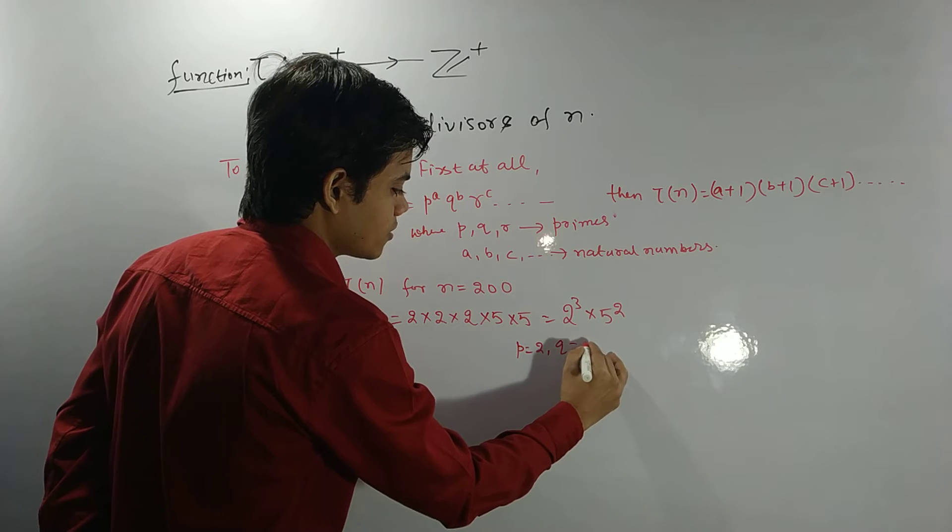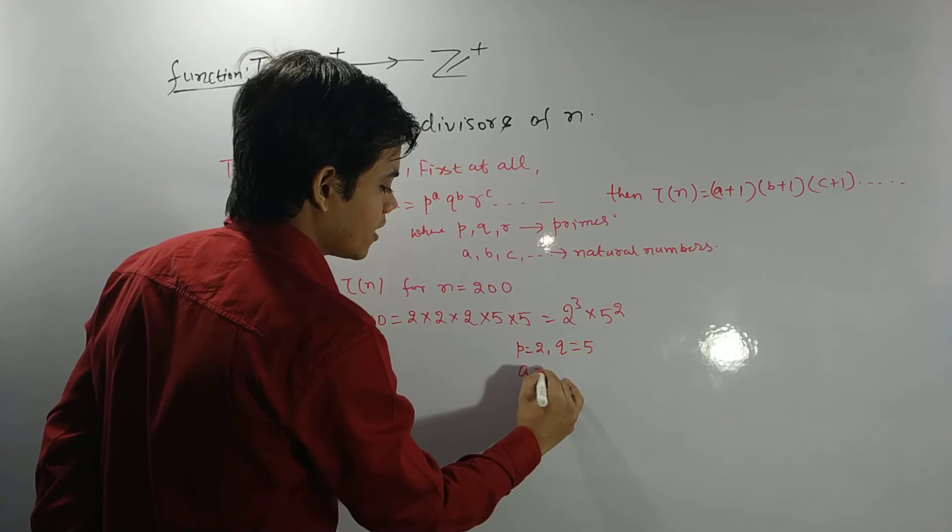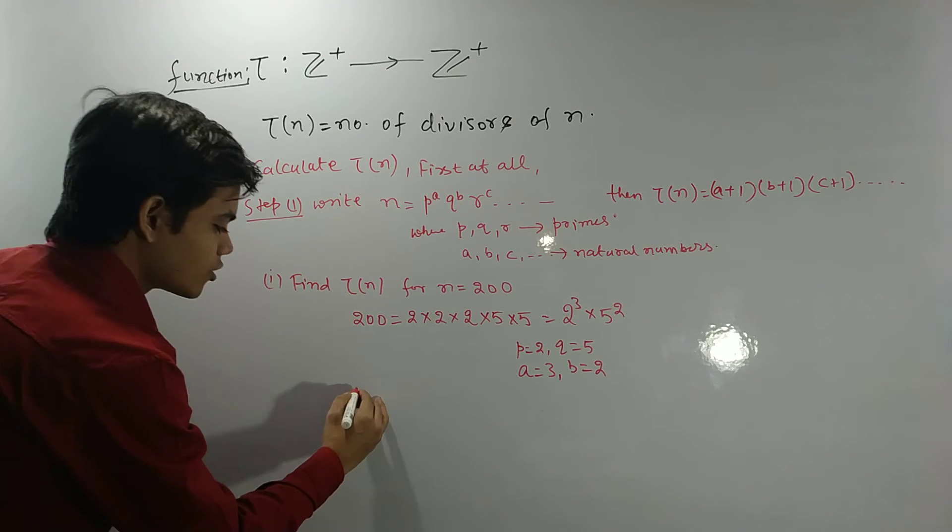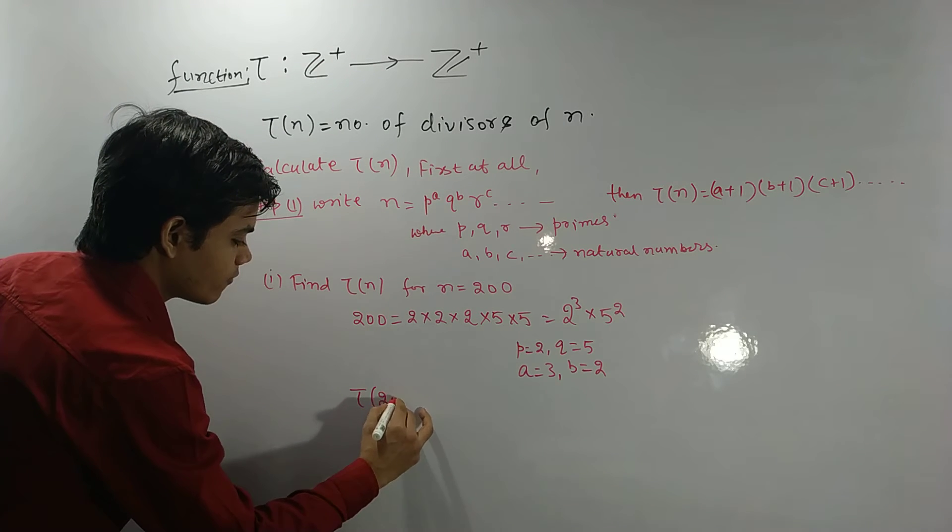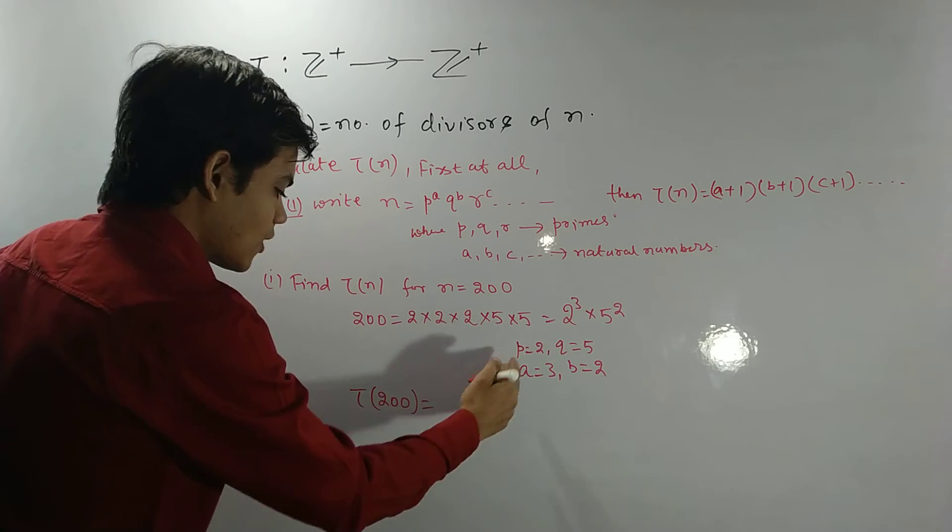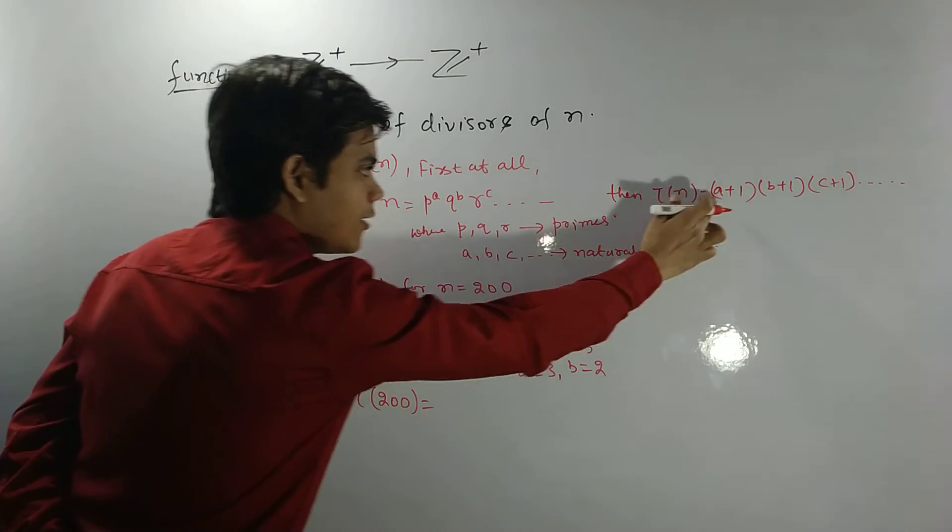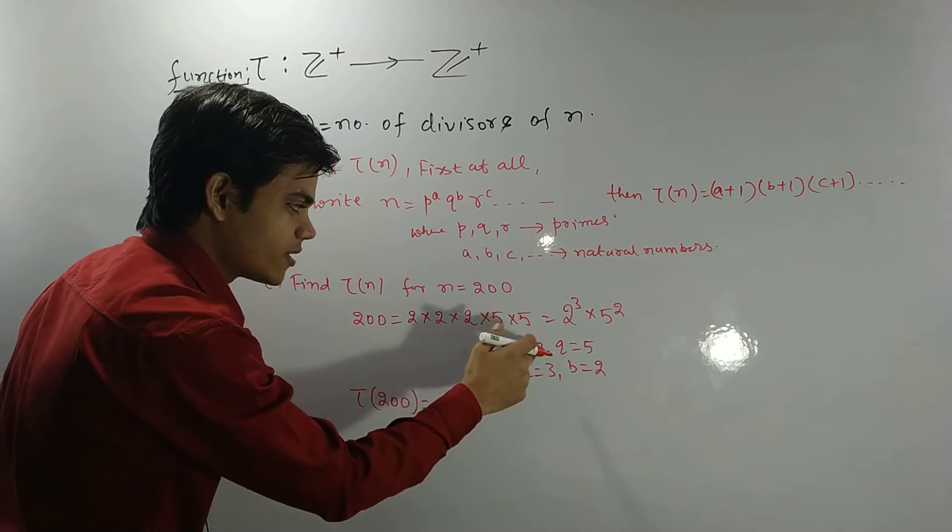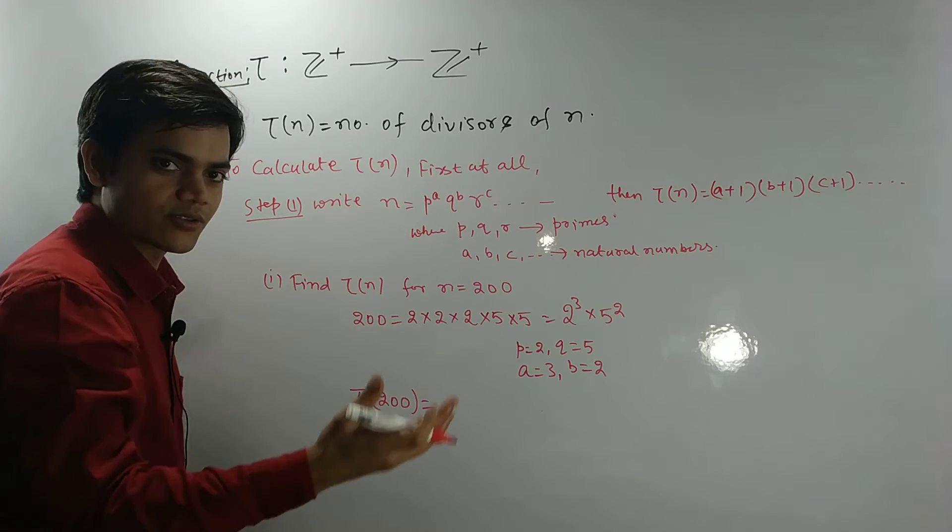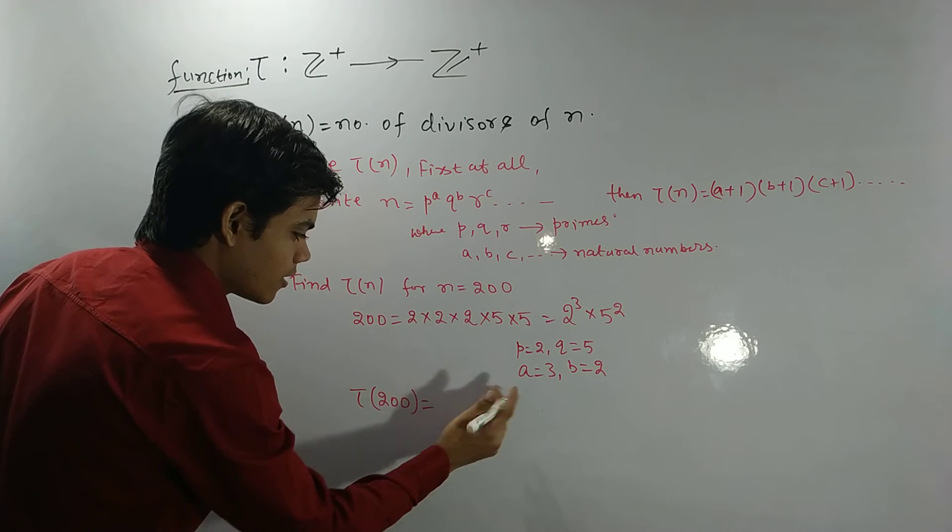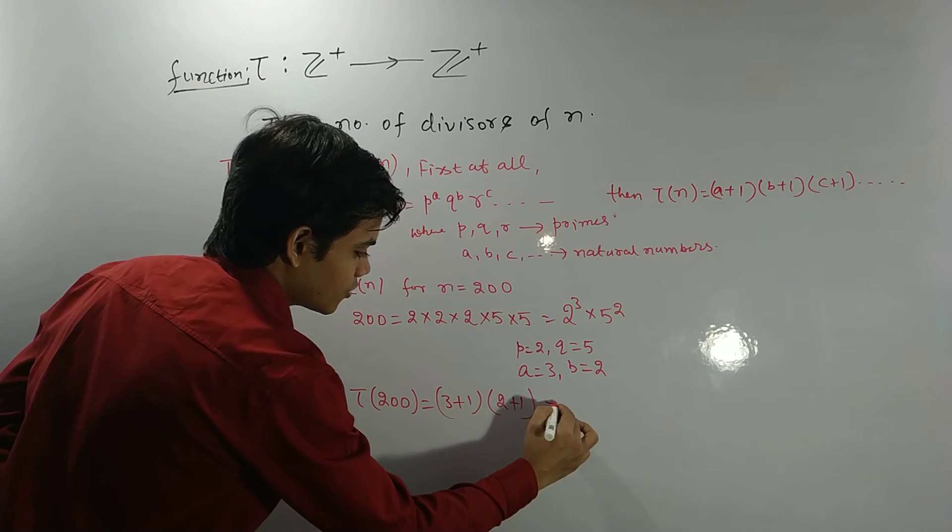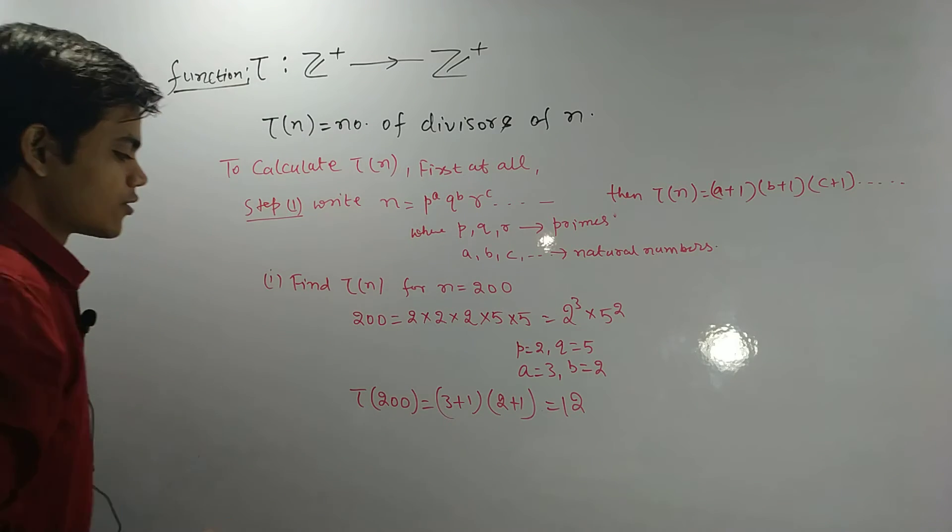Here, what is your p? 2. What is your q? Certainly 5. What is your a? 3. What is your b? 2. So you want to calculate this Tau of 200, then what will be? a plus 1 times b plus 1. Because here a and b we have stopped here only, because 200 is not a very large integer. Therefore, what will be here? 3 plus 1 times 2 plus 1, certainly 4 times 3 equals 12.